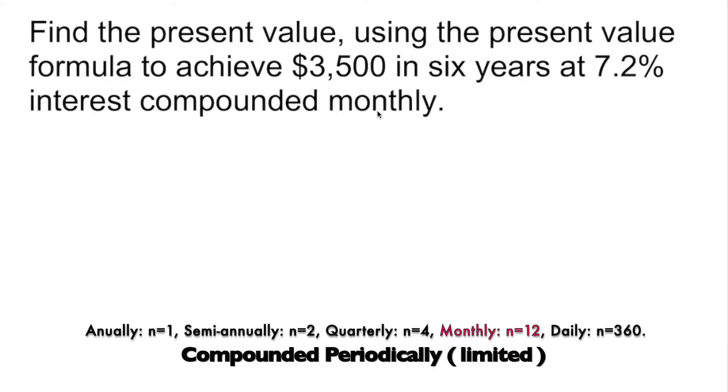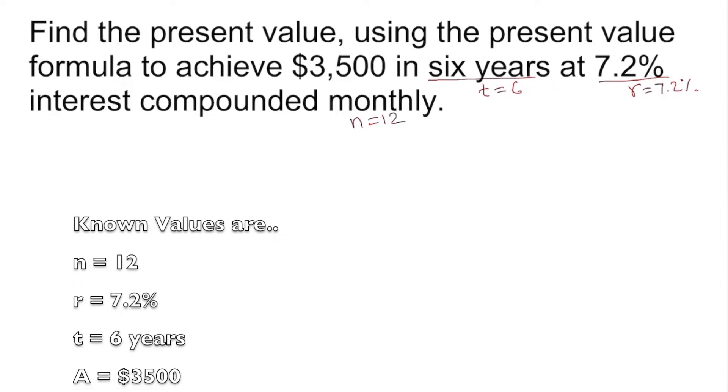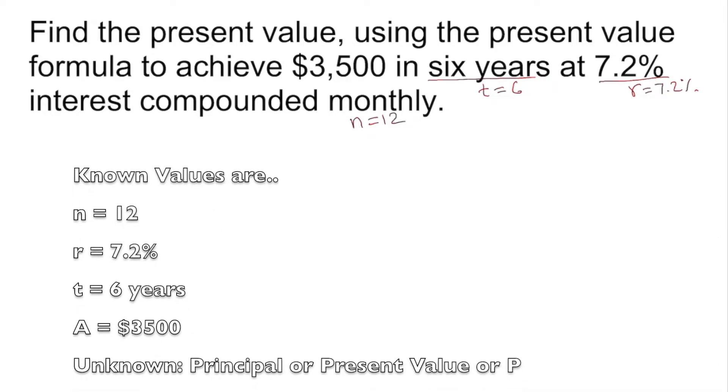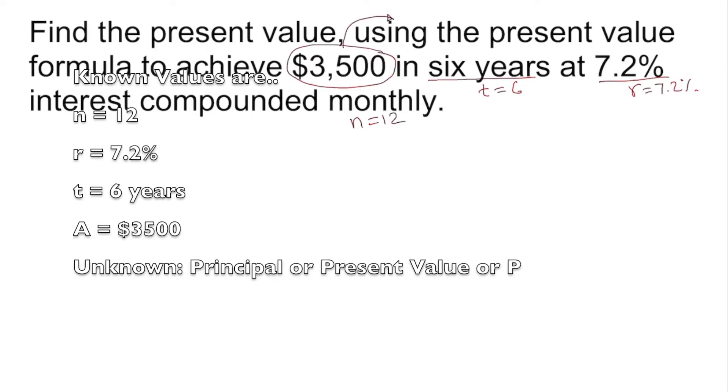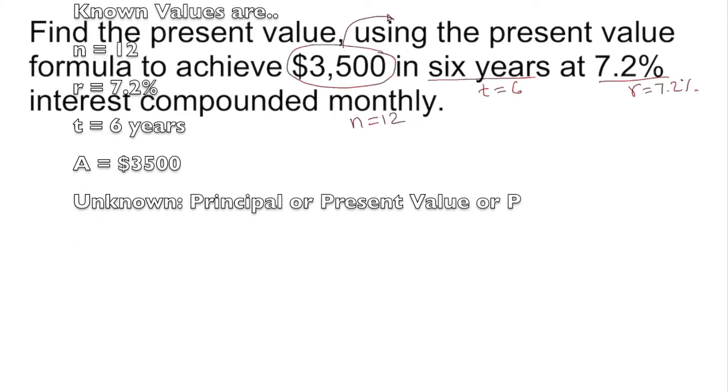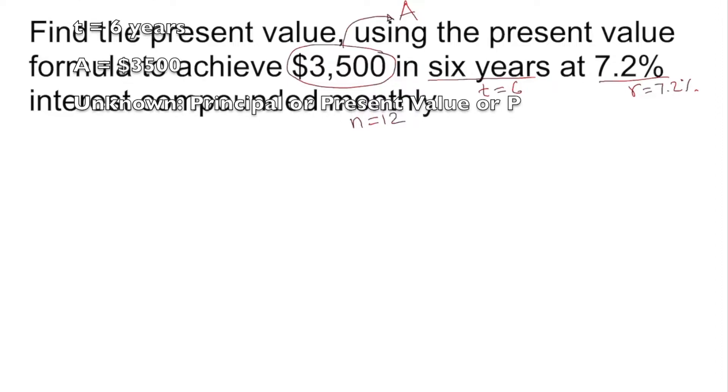Let's sort out the information given here. Our n is equal to 12, that's monthly. The rate r is equal to 7.2%, or converted to decimal. The time t is equal to 6. We have to be very careful - this is not the principal, this is the total amount in our account later on, the amount A after six years. What we are looking for is P, the principal, which is not given.